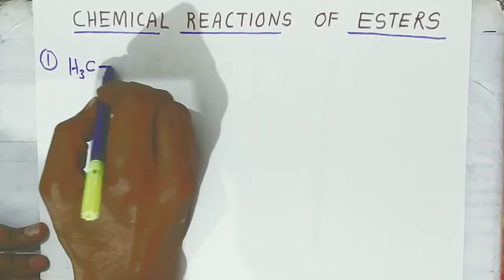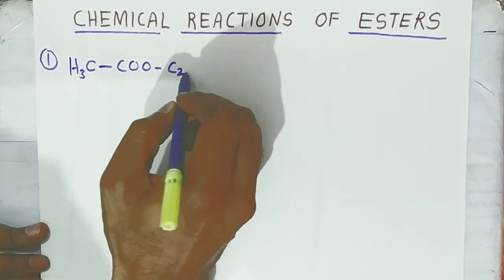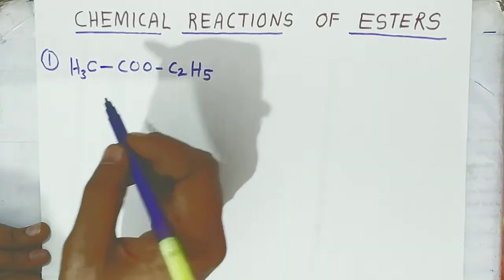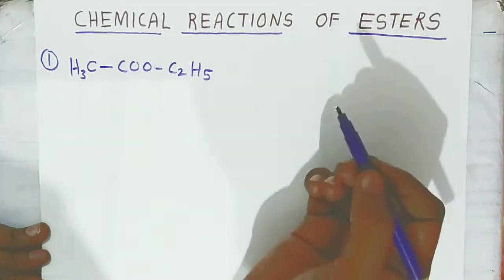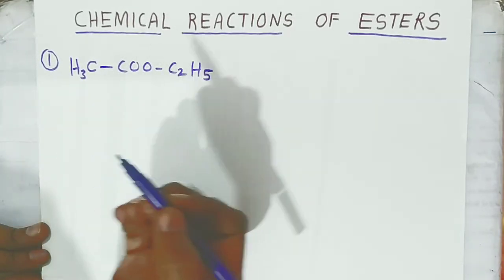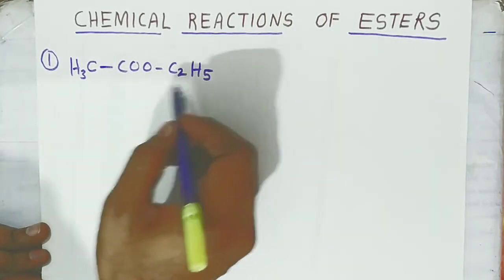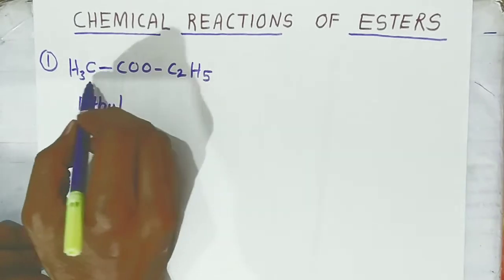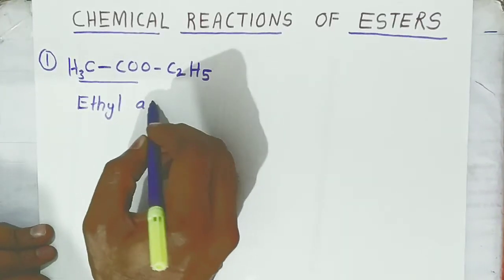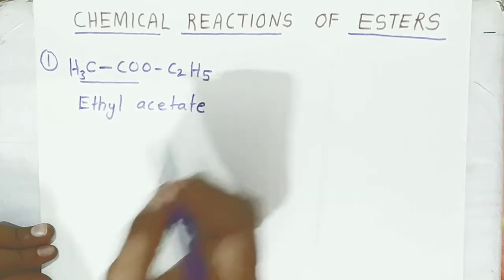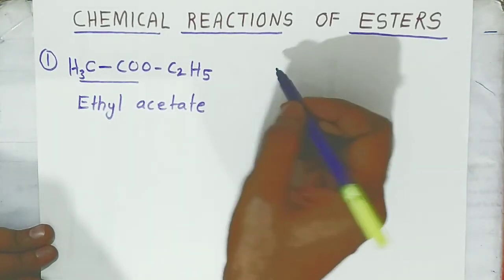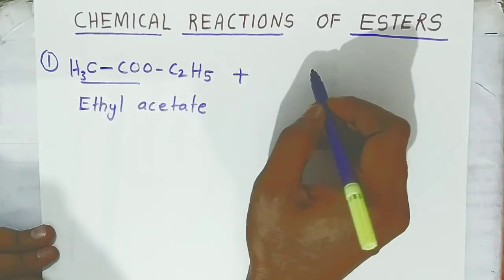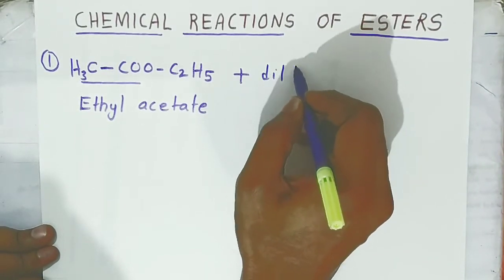First, I am writing ethyl acetate: CH3COOC2H5. This is ethyl acetate — a simple ester. Now you have the ester in your test tube and you are going to react it with dilute HCl. What happens when you add dilute HCl to ethyl acetate?